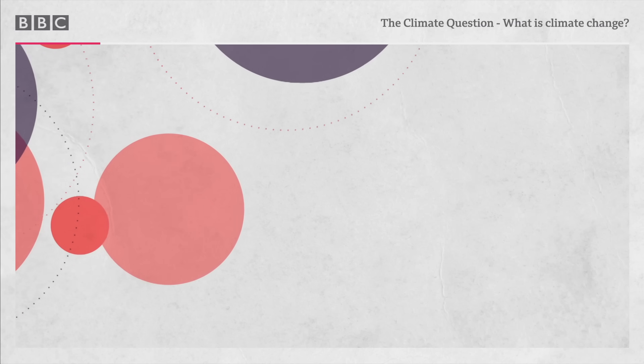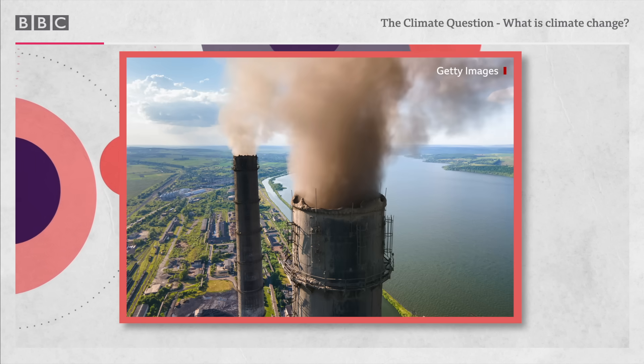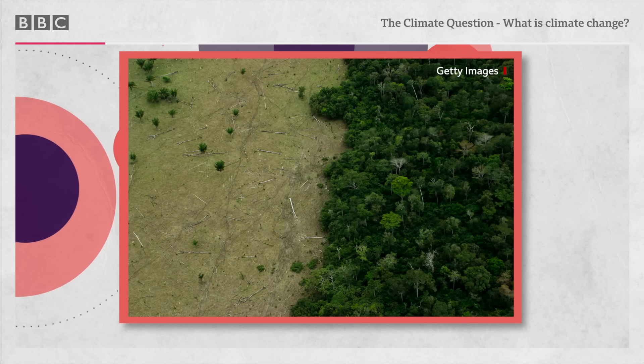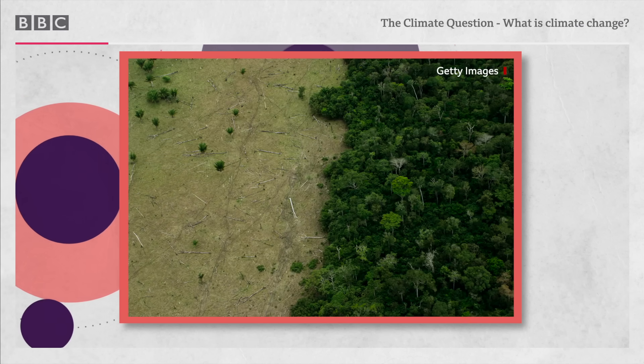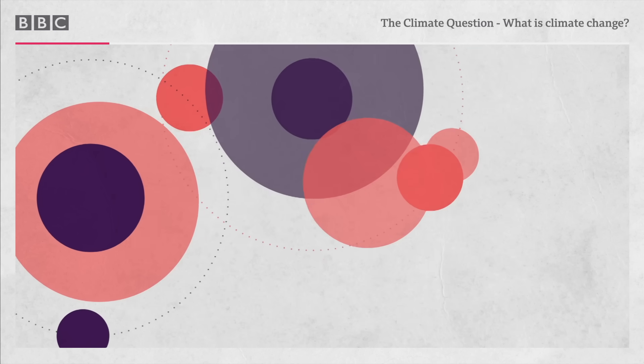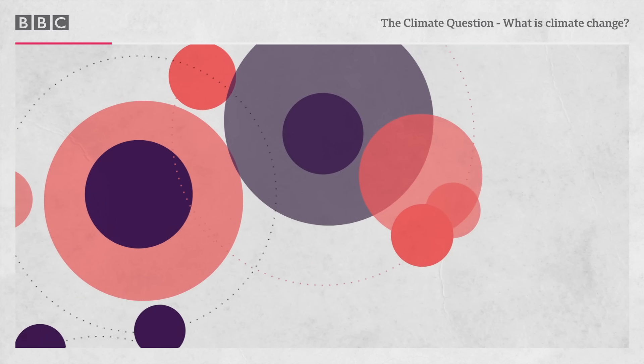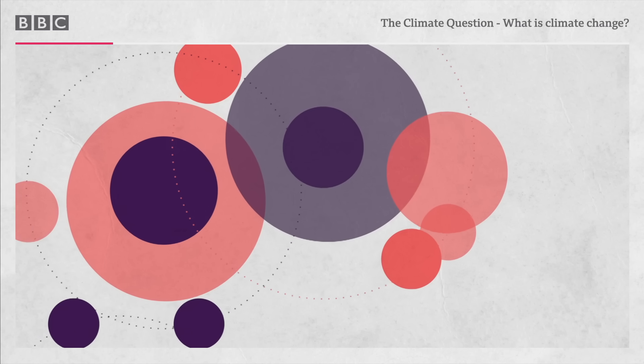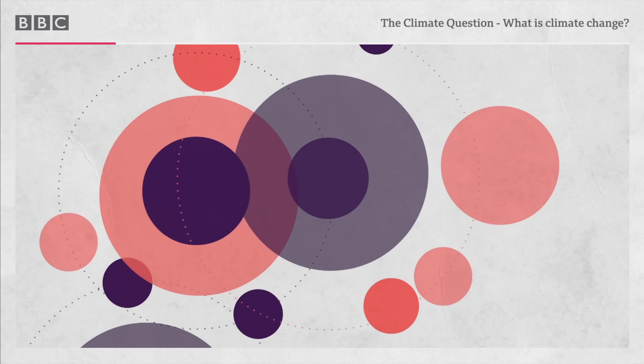So when we talk about climate change, what we're really talking about is heat being added to the Earth system. As humans burn fossil fuels that we dig up from underground, or as we cut down forests, we are putting carbon dioxide into the atmosphere. Carbon dioxide is a greenhouse gas. And the more greenhouse gas you have in the atmosphere, the more of the sun's heat gets trapped and the warmer the surface gets. And that's why it's called a greenhouse effect.